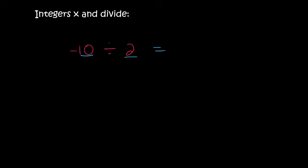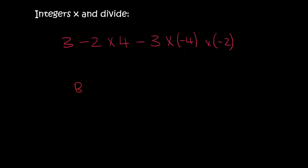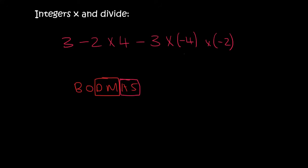10 divided by 2 is 5. There is 1 negative and so the answer is minus 5. Now I'm going to practice sums that have plus, minus, times, and divide. Remember with BODMAS, times and divide come before add and subtract. So let's look for multiplies and divides first.